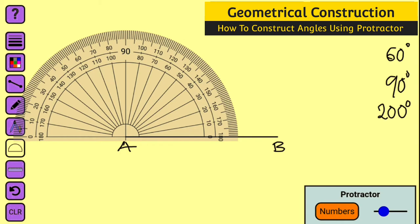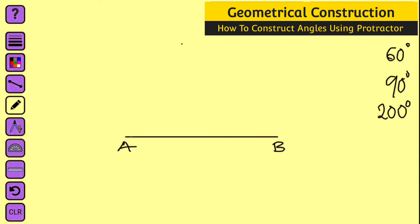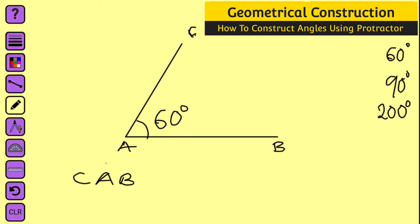So use your pen to tick on 60 degrees on your protractor, which corresponds to 120 degrees clockwise — this is the point. Next, remove your protractor and use your ruler to connect the dot and the origin which is A. This angle right here is 60 degrees. Let me call this point C, therefore angle CAB is equal to 60 degrees.